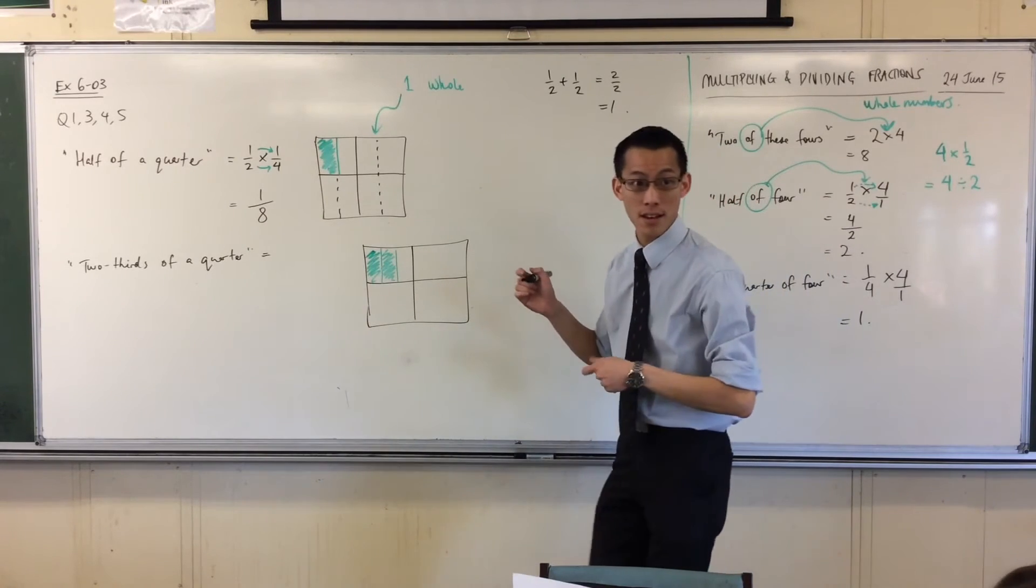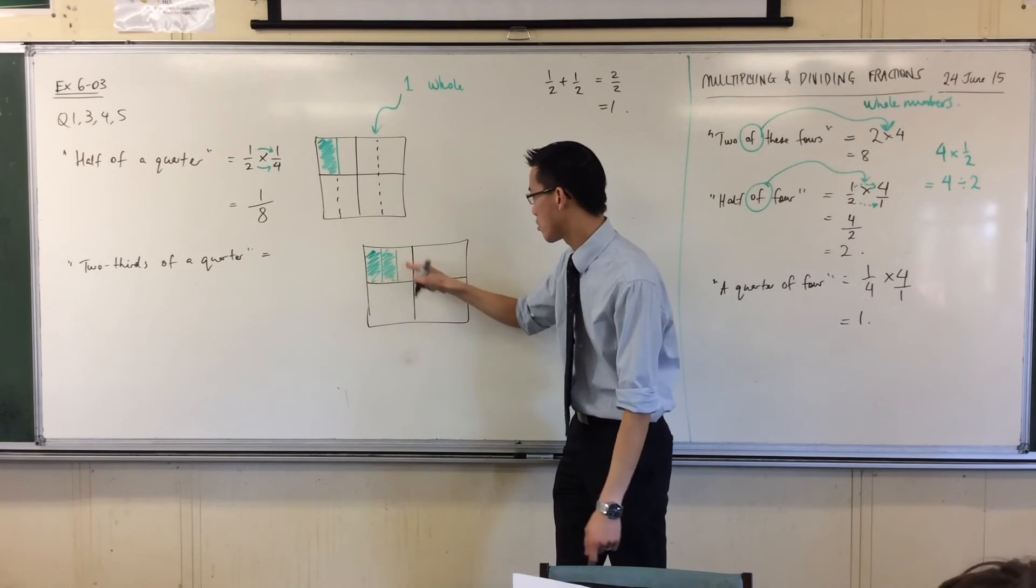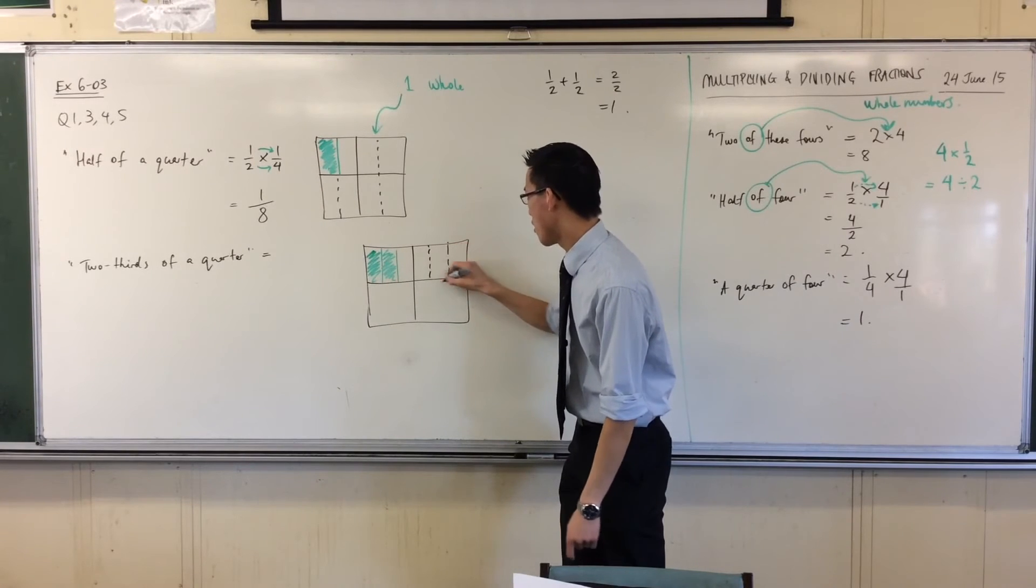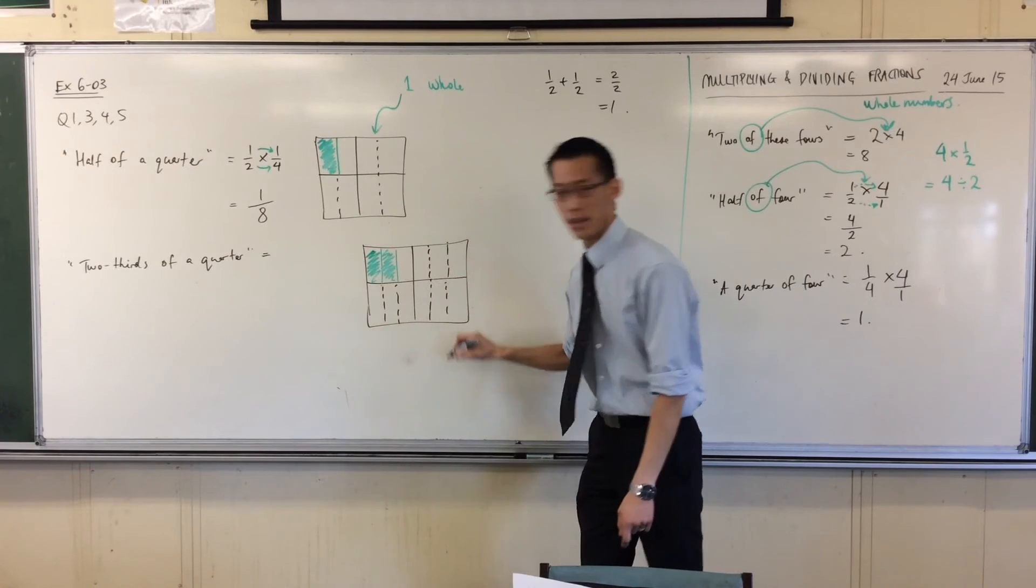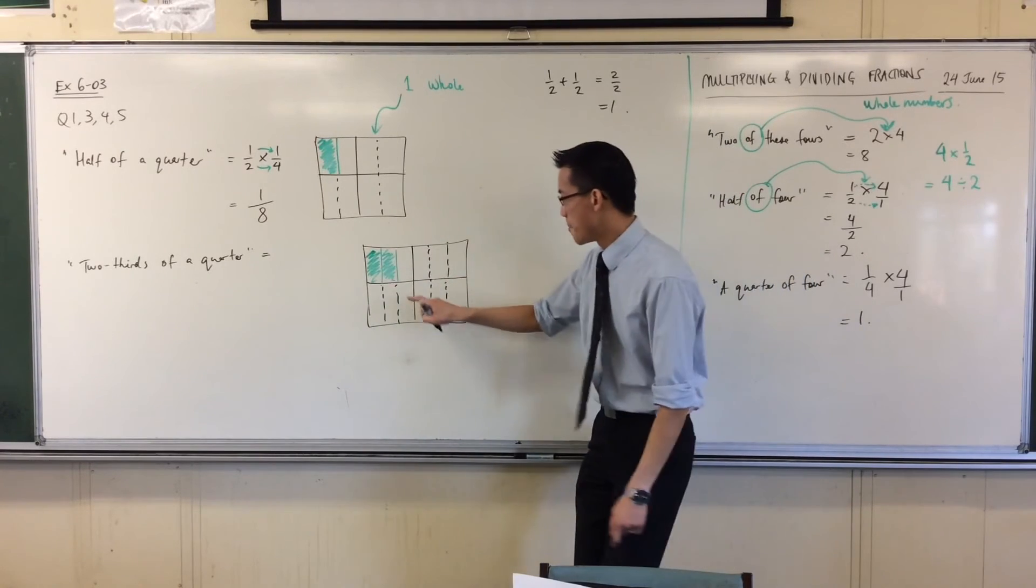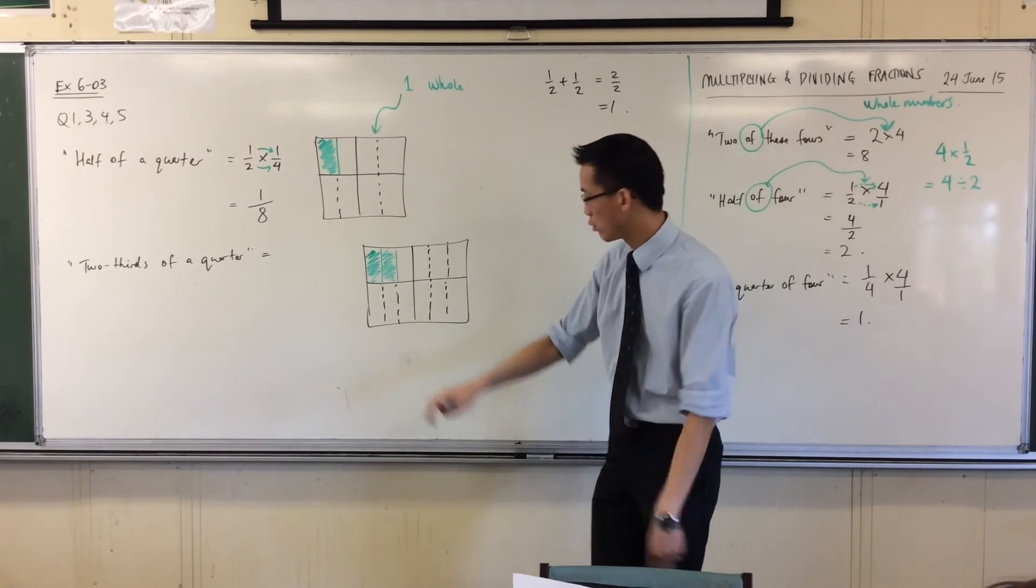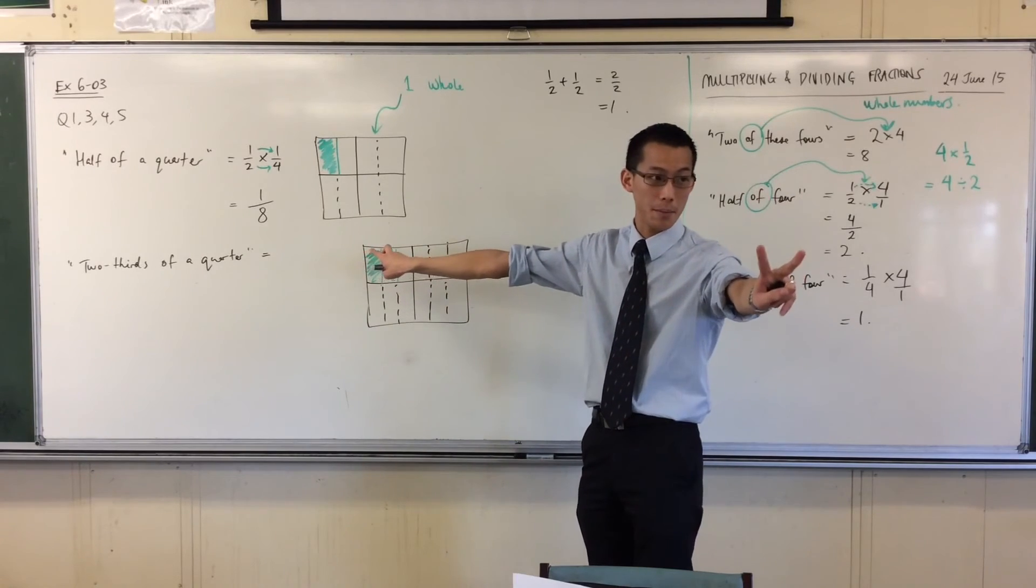Now, then I want to ask the question, just like before, well, how many of those things can I fit in the entire shape? And if you put some extra lines, you'll see. Josh, do you want to suggest? Twelve. Okay, so I've got one, two, three, four, five, six, and then I've got seven, eight, nine, ten, eleven, twelve. There are twelve of these smaller rectangles, and here I've got two of them.